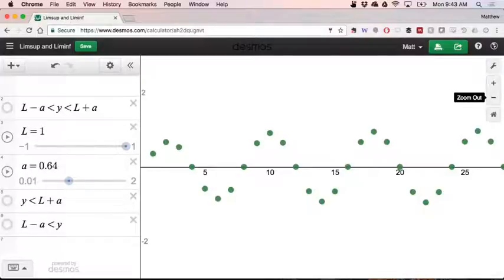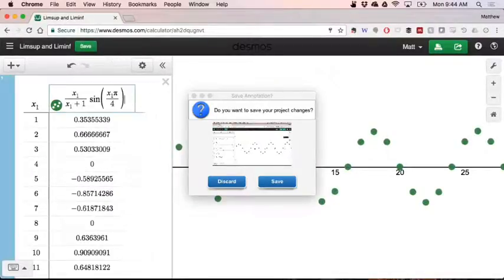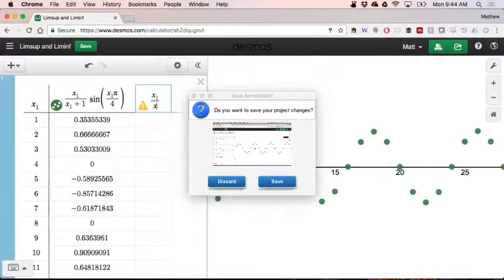So I want to start by asking, do you think we can find a subsequence of this sequence which does converge? What might be a way for us to do that? One idea here is for us to take the formula which defines this sequence and just think about looking at only one of its factors, n over n plus 1.